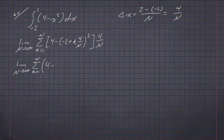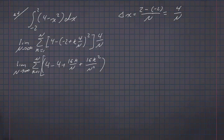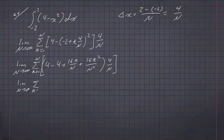Multiplying out — this is going to be a little bit more involved. We have negative 2 squared, which is 4. We have negative 2 times 4k over n, and we'll have two of those, so that's going to be 16k over n. And then we'll have 4k over n squared, which is 16k squared over n squared. This whole thing gets multiplied by 4 over n. The 4 minus 4 cancel each other out, distributing the 4 over n through everything.